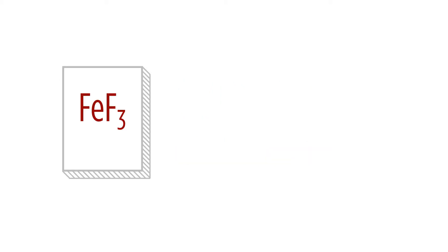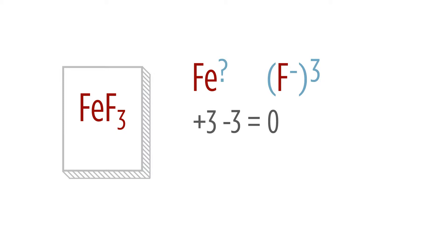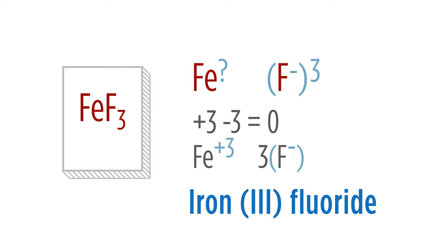If we look at a transition metal — FeF3 — we know this is iron. But iron is a transition metal, so we don't know its charge right away. We know fluoride is negative 1, and we have three of those, so the overall charge is negative 3. To balance the charge in this ionic compound, iron must be plus 3. To indicate that in the name, we put iron, parentheses, Roman numeral 3, close parentheses, then fluoride. For transition metals and metals without a definite cation charge, we use the Roman numeral system.